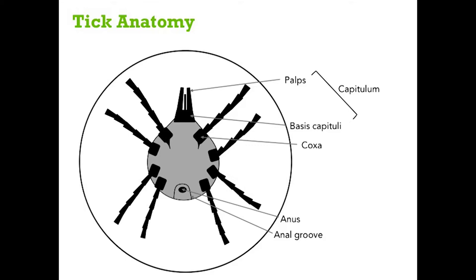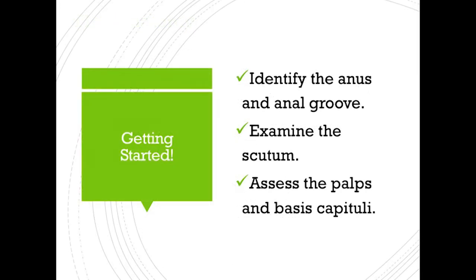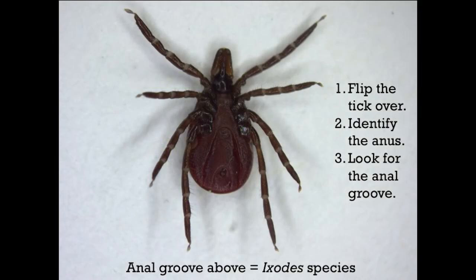Now that you know a little bit more about tick anatomy, we can apply this knowledge to help us look at photos of real tick samples. The first thing you want to do is identify the anus and the anal groove. To look at the anus, you need to flip the tick over and then identify the anus on the bottom part of the tick. If there's a groove that loops over the anus, then you know the tick is an Ixodes species. But just be careful not to confuse this with the larger groove that stretches and extends almost more than halfway up the tick — that's a completely different structure.